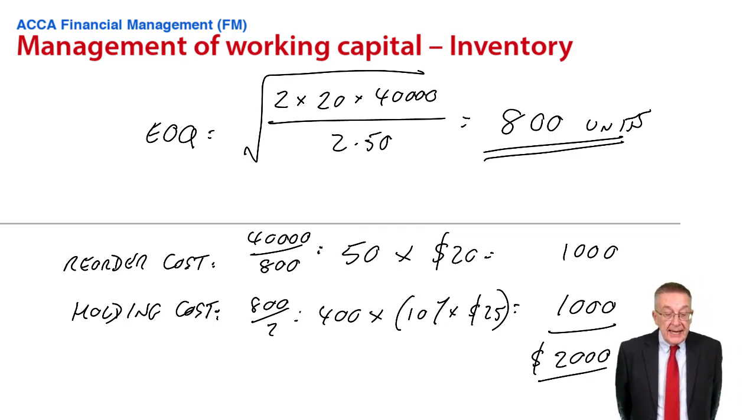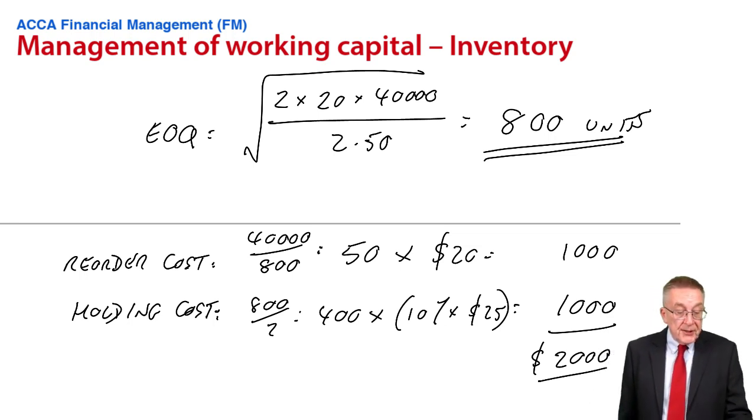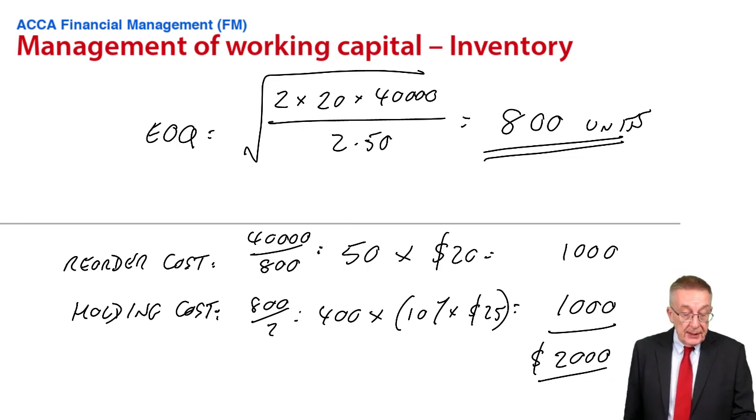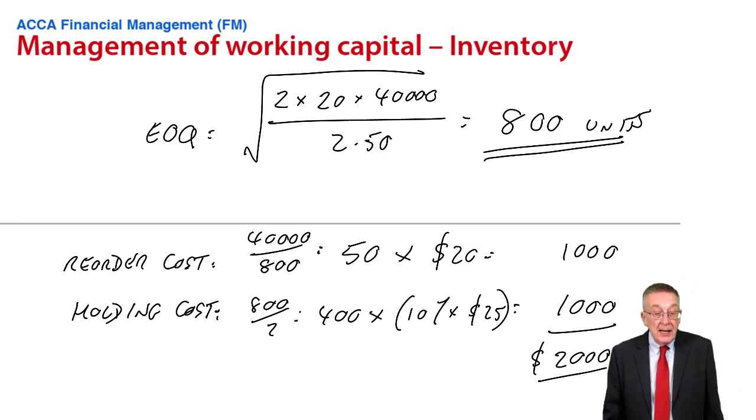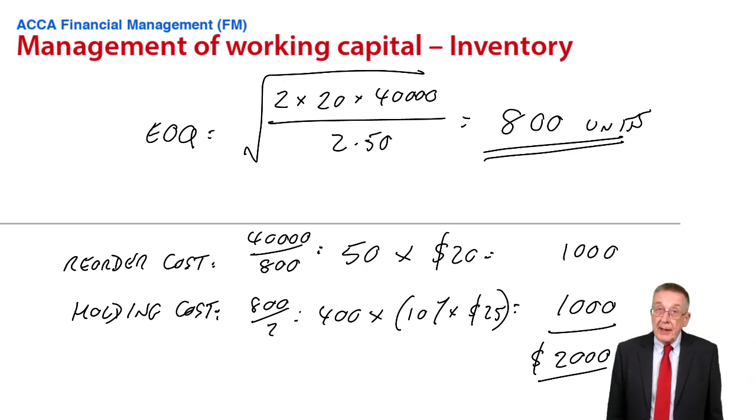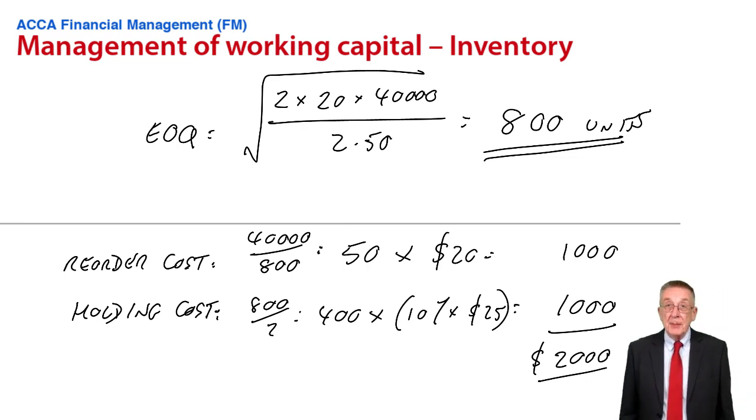For the information given in example one, the example we did in the last lecture, the supplier now offers us discounts on purchase price as follows. It depends on the quantity we order each time. If we order between zero up to 5,000 units, we get no discount. But if we're prepared to order from 5,000 and less than 10,000 each time, they'll give us a 1% discount on the purchase price. And if we're prepared to order 10,000 or more each time, we'll get a 1.5% discount on the purchase price.